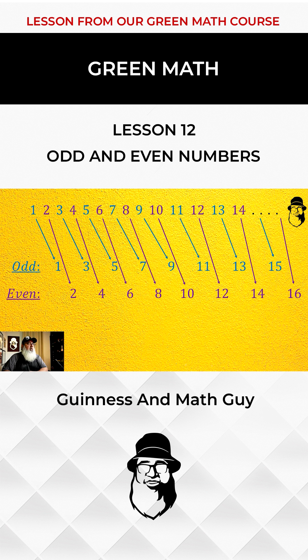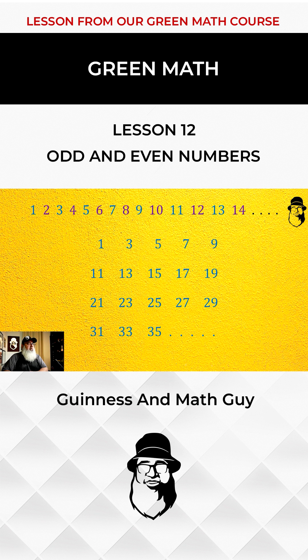If we extend the sequence of odd numbers, we get these numbers and we can see from this that all odd numbers end in 1 or 3 or 5 or 7 or 9.